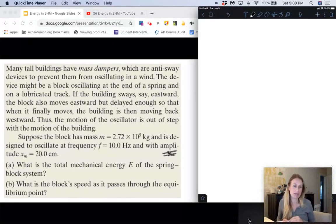So here's an example for simple harmonic motion. Many tall buildings have mass dampers, which are anti-sway devices to prevent them from oscillating in a wind. The device might be a block oscillating at the end of a spring on a lubricated track. If the building sways, say, eastward, the block also moves eastward, but it's delayed enough so that when it finally moves, the building is then moving back westward.